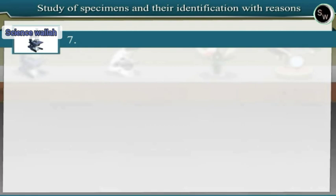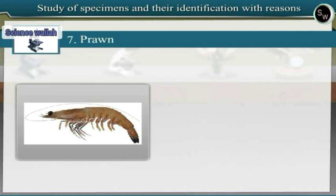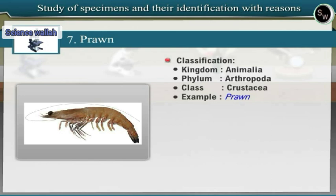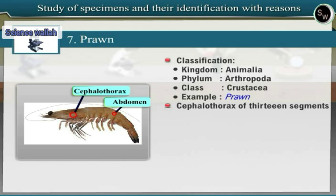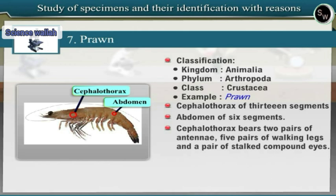Specimen 7: Prawn. Observe a fresh or preserved specimen of Prawn. Prawn belongs to class Crustacea of Phylum Arthropoda in Kingdom Animalia. Prawn has jointed appendages and is included under Phylum Arthropoda. Since there are five pairs of walking legs, Prawn belongs to class Crustacea. The body of Prawn is divisible into cephalothorax and abdomen. The cephalothorax consists of 13 segments while the abdomen consists of only 6 segments. The cephalothorax bears two pairs of antennae, five pairs of walking legs and a pair of stalked compound eyes. It is dorsally covered by carapace.